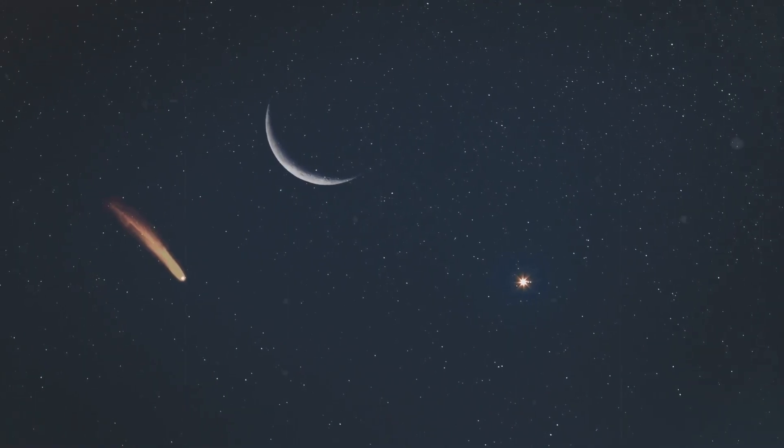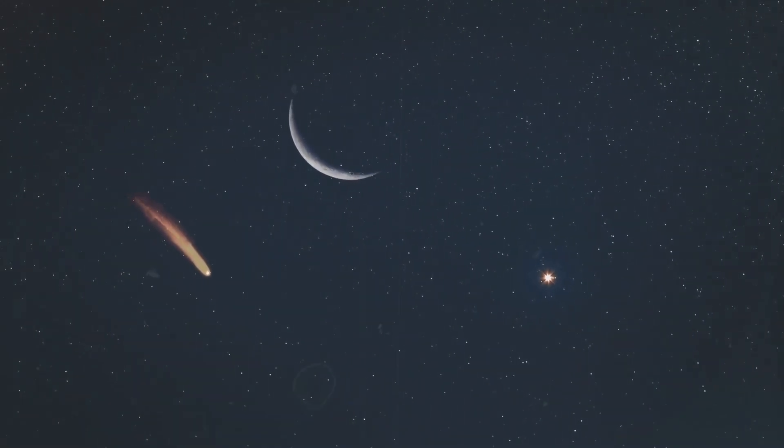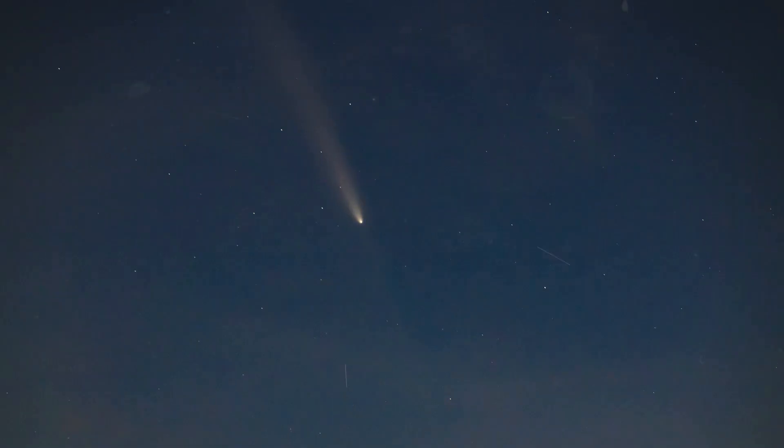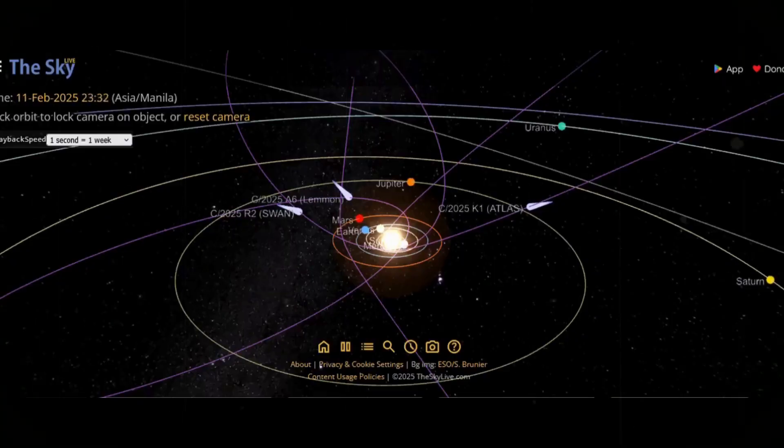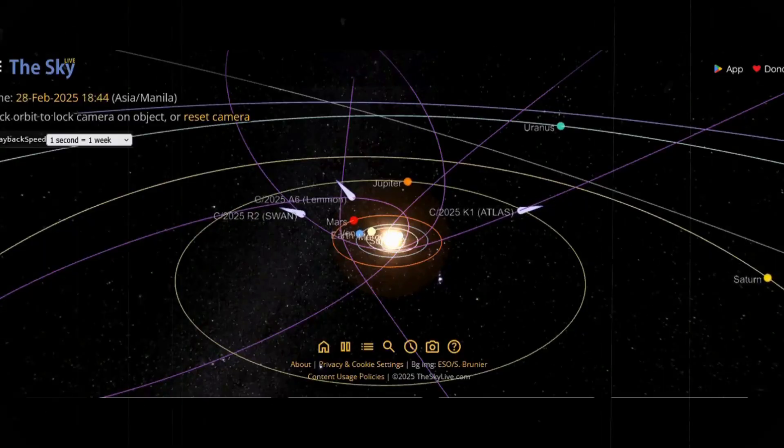But predictions about comets are notoriously unreliable. They can flare suddenly, becoming brighter than anyone expects, or they can crumble to dust, fading into nothing. The possibility of surprise makes this swarm even more unsettling.